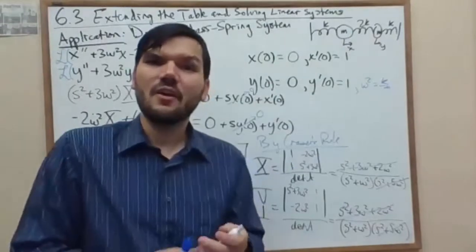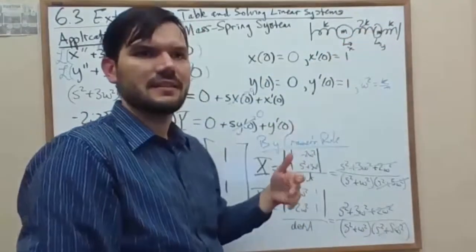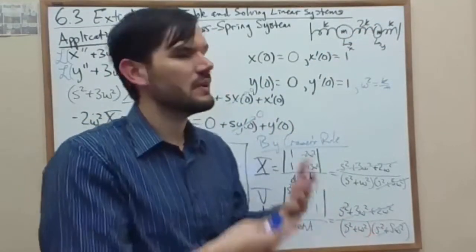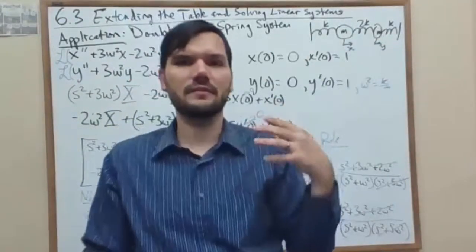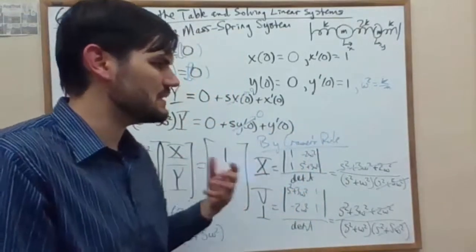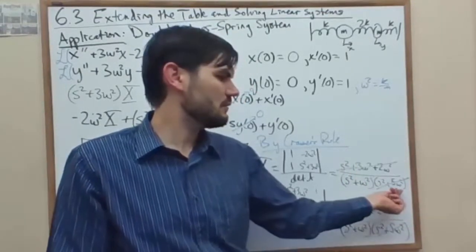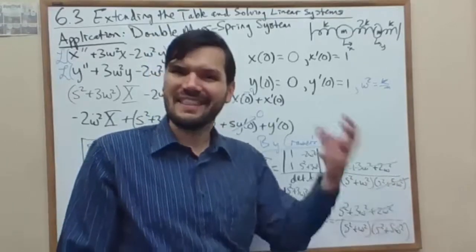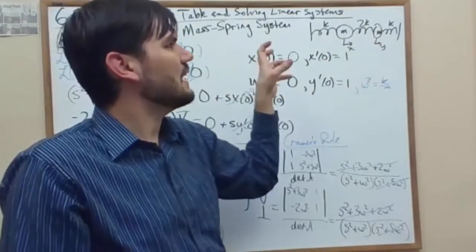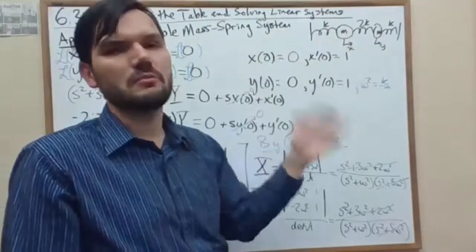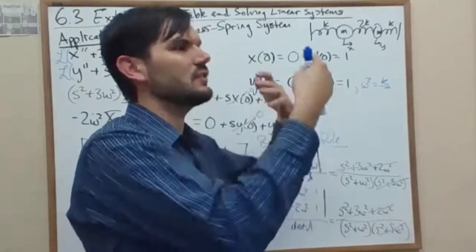Now what does this relate to physically? Because we chose initial conditions that pushed the masses in sync with one another, we essentially are canceling out the effect of the middle spring. So the frequency that's based upon the middle spring, related to the s squared plus 5 omega squared, that frequency is what's being removed from the motion of these two masses when you have symmetric in sync motion of the initial conditions.